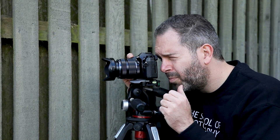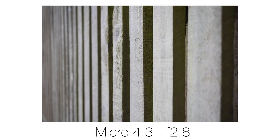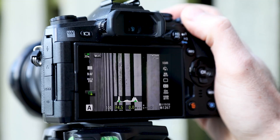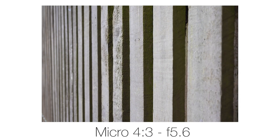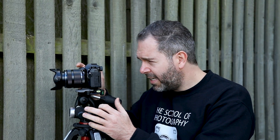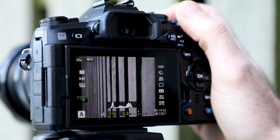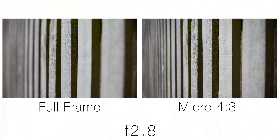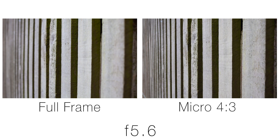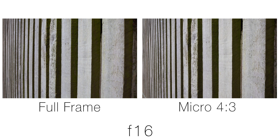Here's the first shot at f2.8. Now I'm going to change the aperture to f5.6 and take another shot. And now I'm going to change the aperture to f16 and take another shot. Easy as that. And now I'm going to overlay the pictures side by side. Here is the f2.8 one, here is the f5.6 one, and here is the f16 one.